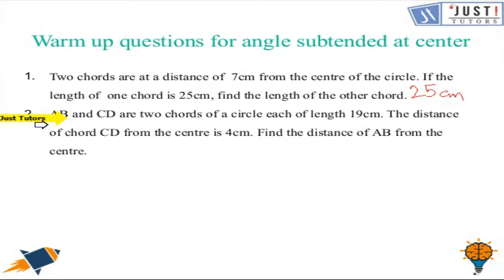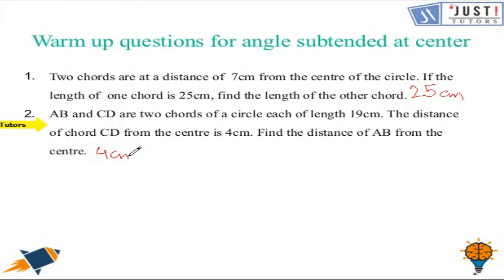The next question is that we have two chords AB and CD, each of length 19 centimeters, and the distance of one chord is four centimeters. We have to find the distance of AB from the center. As we know that equal chords are always equidistant from the center, so AB is also at a distance of four centimeters from the center. If both of your answers are correct and you applied the same properties, well done — you have shown really good progress.